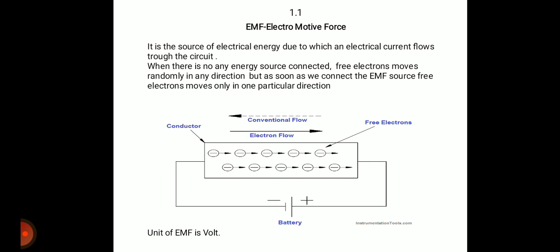EMF is the source of electrical energy due to which electric current flows through the circuit. If you see in the diagram, one battery is connected across the conductor. There is a flow of electrons towards the positive terminal of the battery. Electrons flow through the conductor because the battery has a positive terminal, and each electron has a certain negative charge.